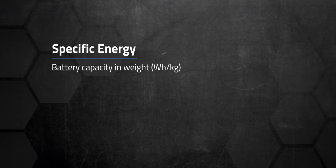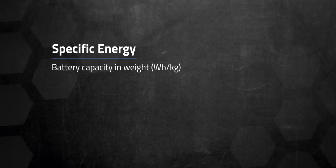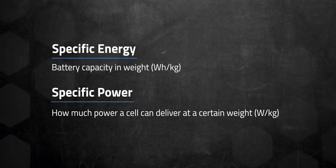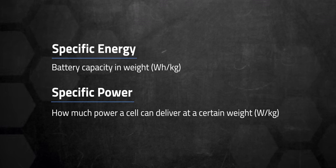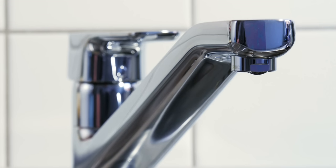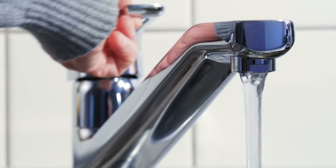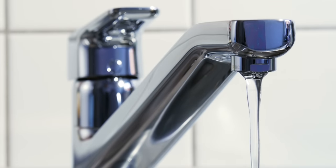In case you aren't familiar with specific energy, it's often referred to as energy density — it's how many Wh per kg the battery is capable of storing. Specific power is how much power output a battery is capable of divided by its mass. One way to think about it: it's like your kitchen faucet. When you open the tap all the way, how much water is it capable of allowing to flow through at once? Specific energy is storage, and specific power is flow. I have a video that dives deeper into this if you'd like to see more.